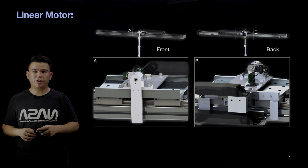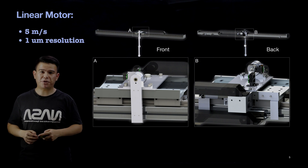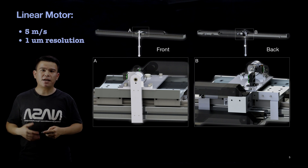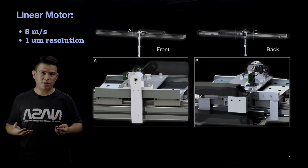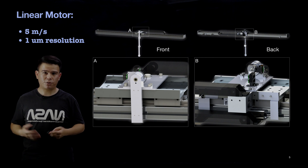When it comes to the linear motor, its maximum speed is 5 meters per second, and it has really high accuracy as well, down to 1 micrometer resolution.